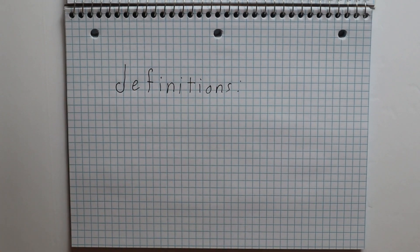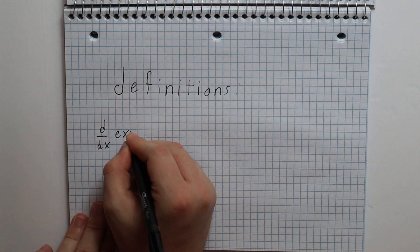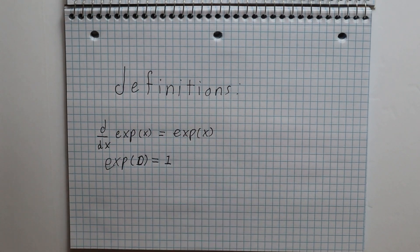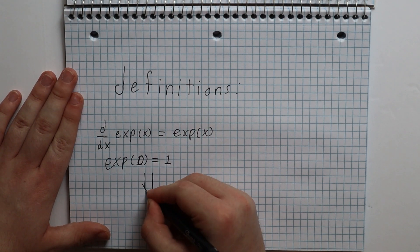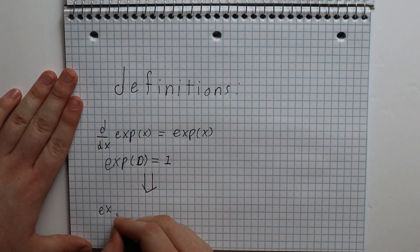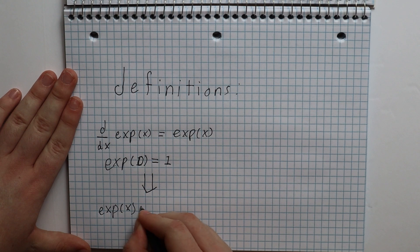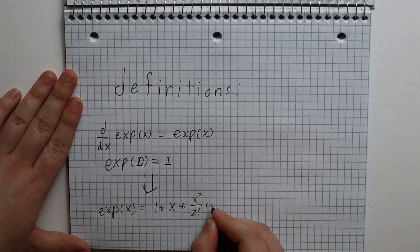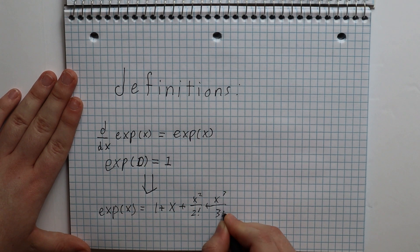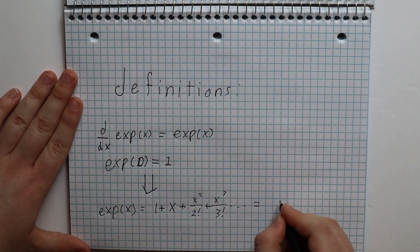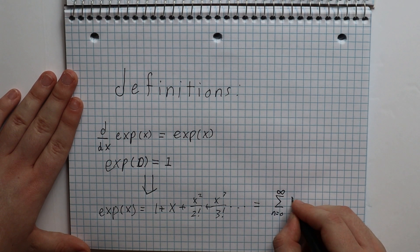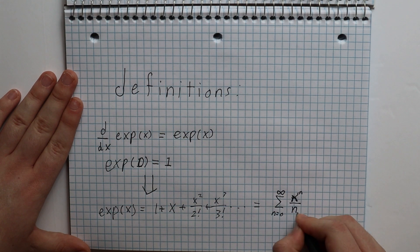First off, we have the exponential function, which by definition is its own derivative, and the exponential function of 0 is equal to 1. From this, we get the Taylor series expansion of exponential of x: it equals 1 plus x plus x squared divided by 2 factorial plus x cubed divided by 3 factorial, and so on. Or written in summation notation, the exponential of x is equal to the sum of x to the n divided by n factorial from n equals 0 to infinity.